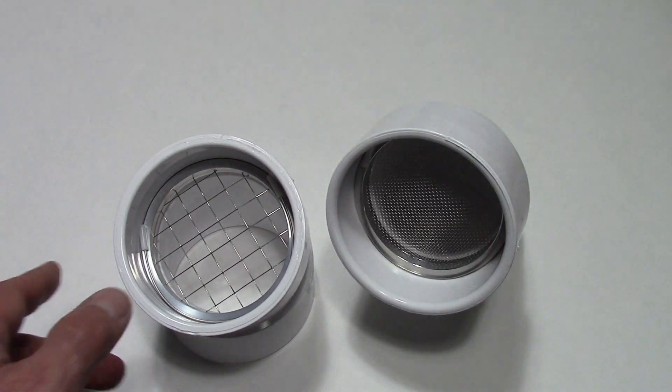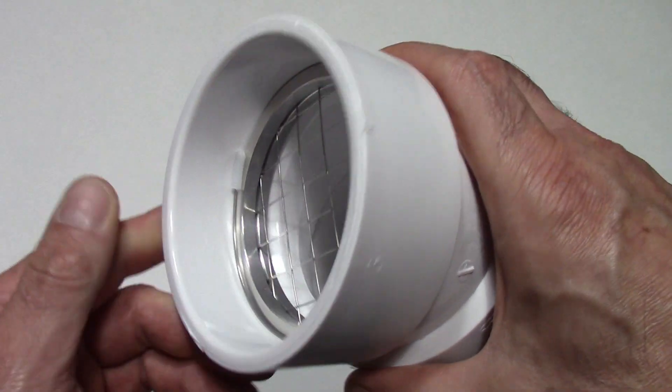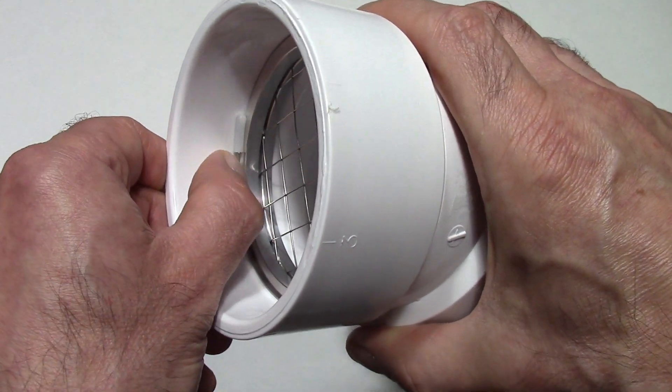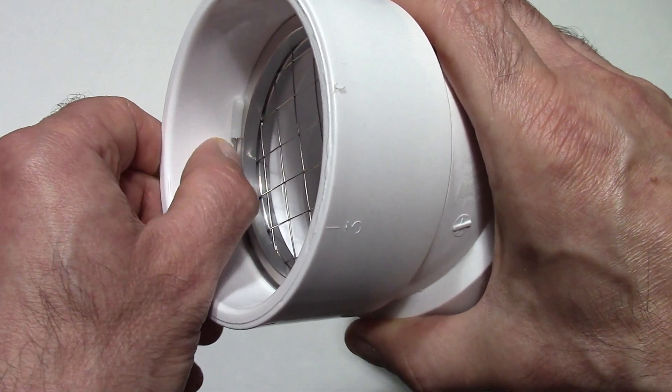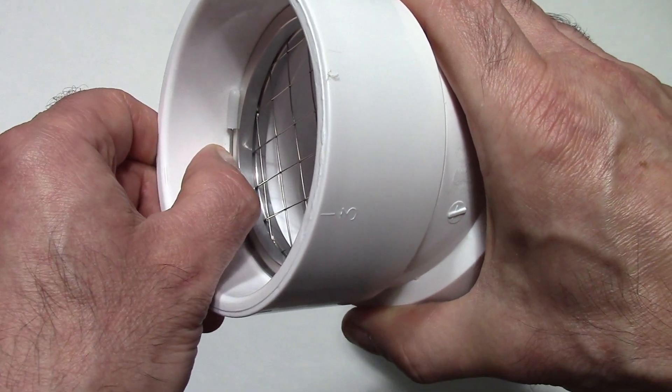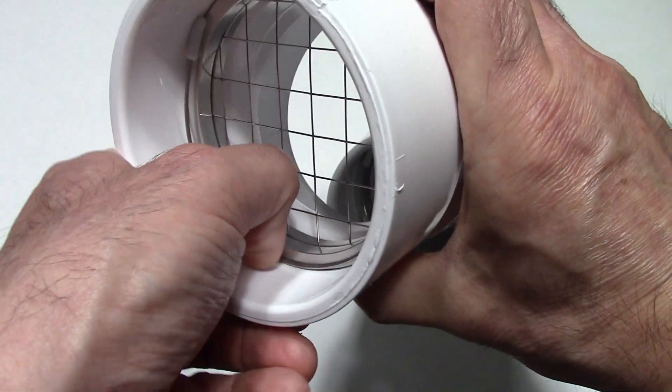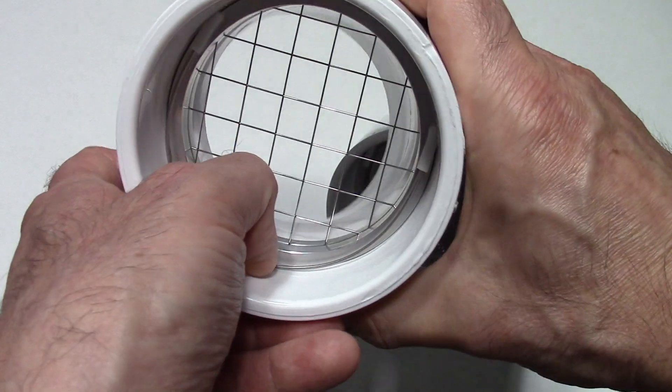So to remove this vent screen, what you want to do is take your nail on the outer edge of the internal wire clip, get between the internal wire clip and the housing, and then pull it towards you like so.